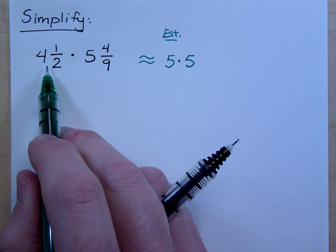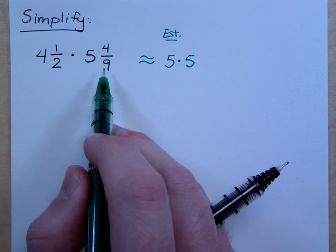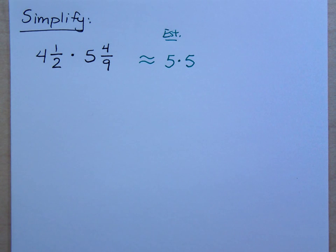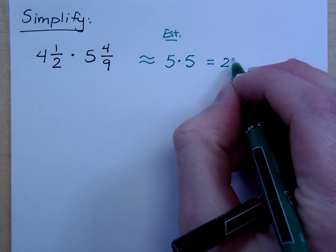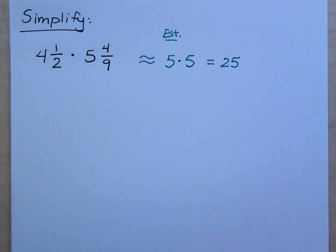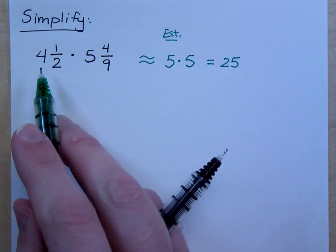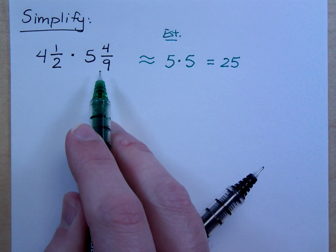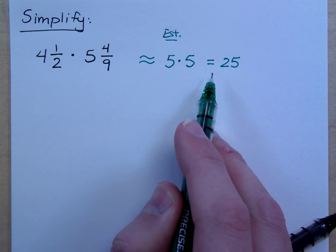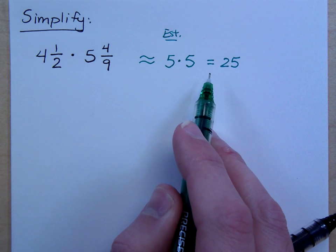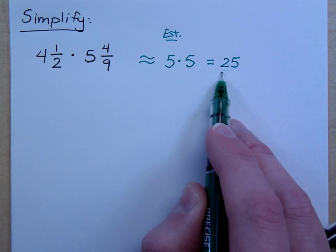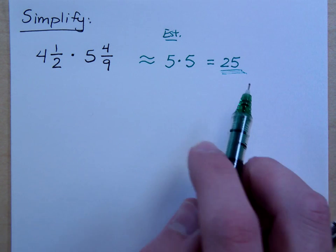And then notice what you did here. You rounded up on this guy, you rounded down on this. So it's not that they completely cancel each other out, but I think this would be, you know, the 25 should be a lot closer to our answer than had we rounded down on both of those. Because think about it, if you round down here and you rounded down here, then you know that your estimated answer is going to be a lot lower than what the real answer is. So I expect an answer around 25. Does that mean my answer will be 25? No.